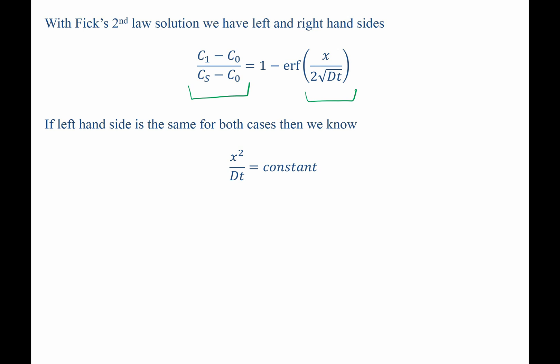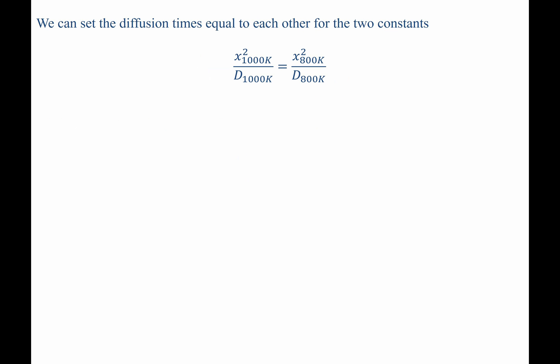Now that we know X squared over DT is a constant, it allows us to use a constant of proportionality approach. We know that at 1000 Kelvin, X squared over D must be equal to X squared over D at 800 Kelvin.